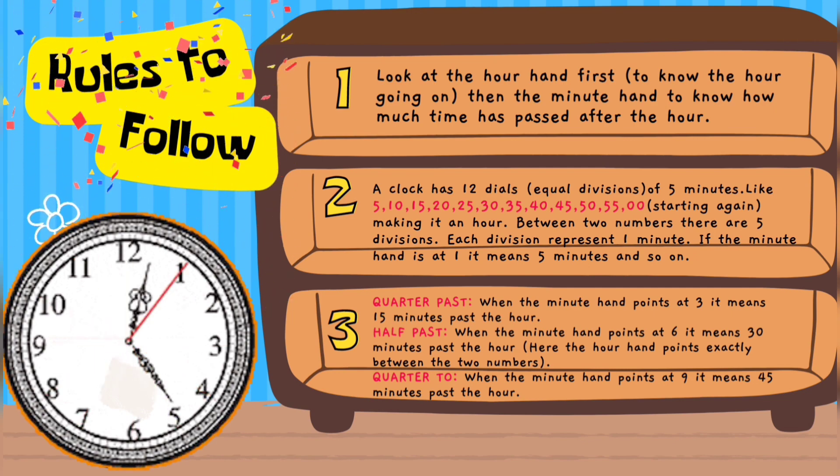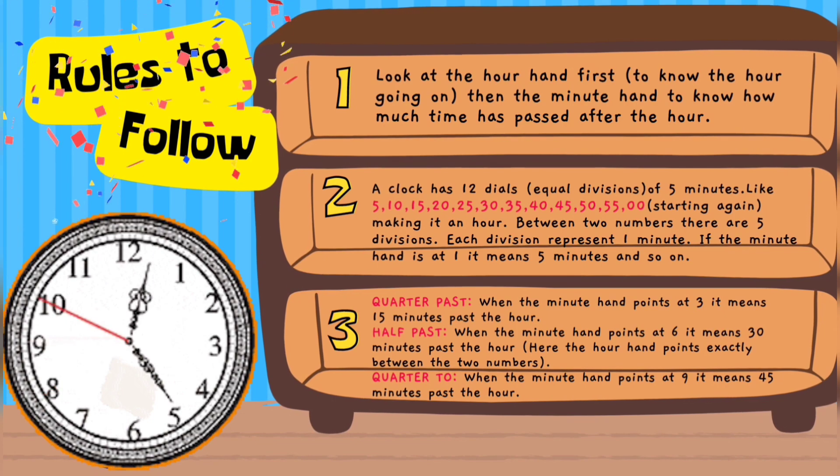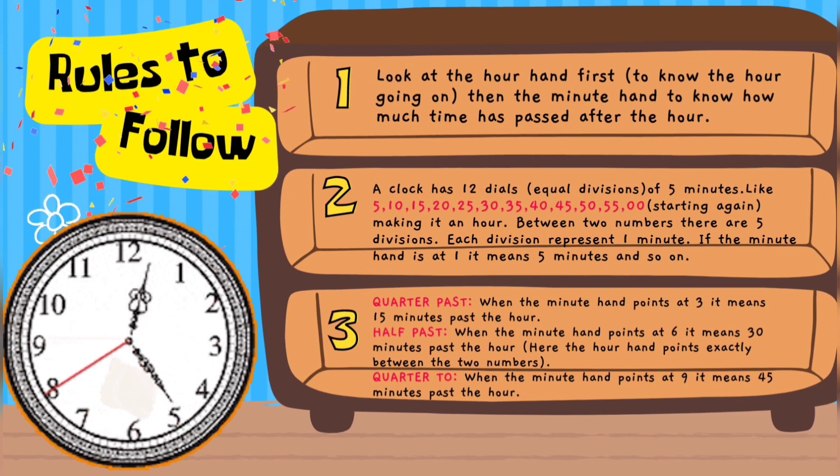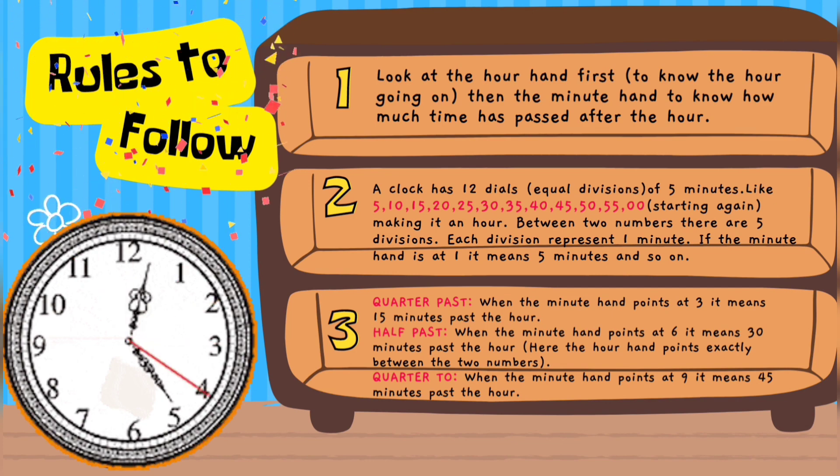Second rule: A clock has 12 dials equal divisions of 5 minutes like 5, 10, 15, 20, 25, 30, 35, 40, 45, 50, 55 and then 0, which means starting again, making it an hour.